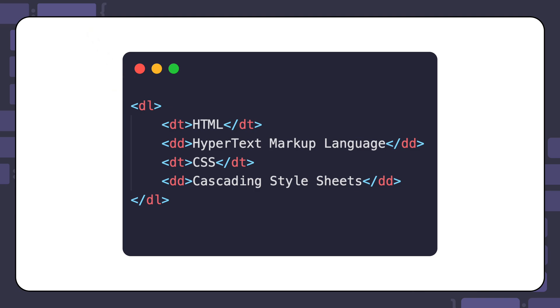Then, one description term element, DT, for each term. In this case, the description list has two terms, HTML and CSS, so it has two of these elements.